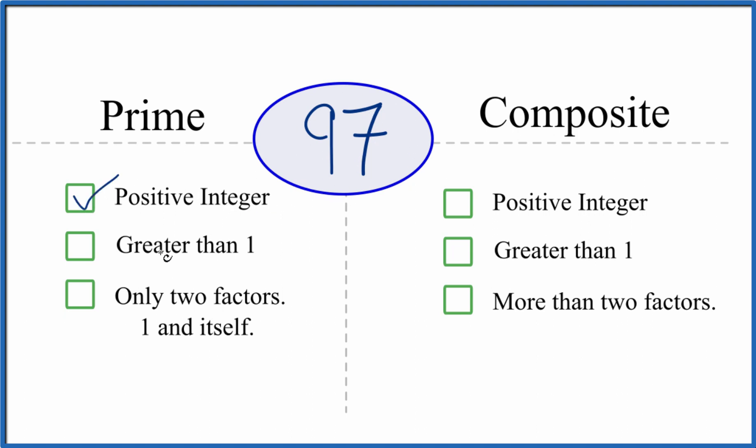We have this positive whole number that's greater than 1, and the question is: are there only two factors that go into 97? 1 and itself - so 1 and 97. That would be two factors.